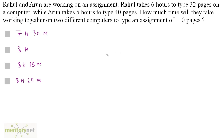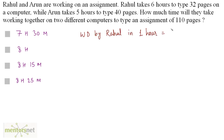We cannot assume the total work done here as 1, because the work done is given to you. The work done by Rahul is 32 pages and the work done by Arun is 40 pages. Rahul takes 6 hours to type those 32 pages, so the pages typed by Rahul in 1 hour will be equal to 32 by 6.